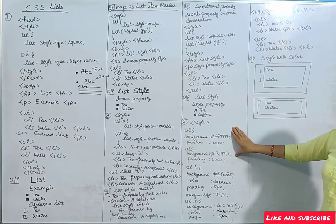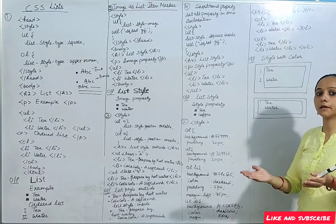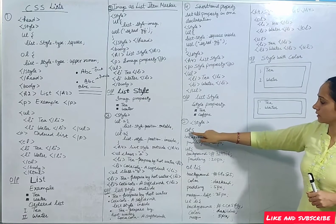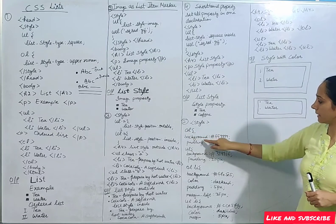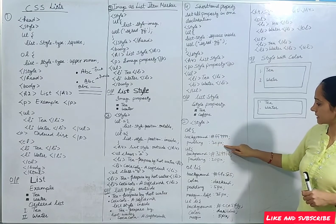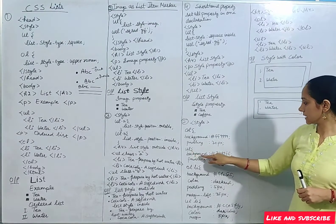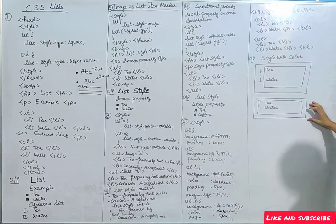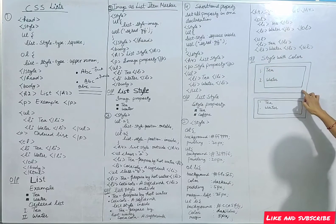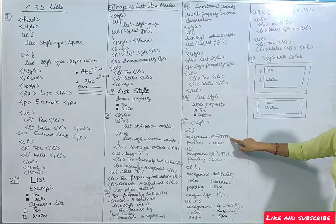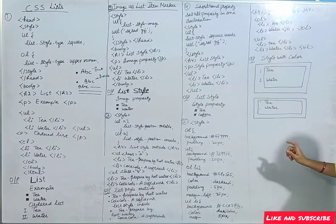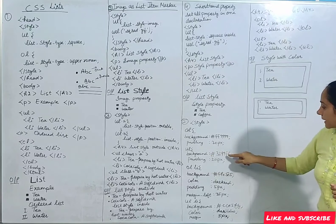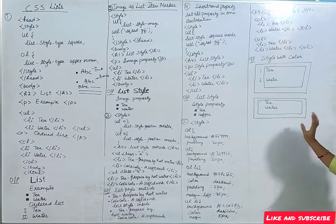After that, we can see something related to colors. We can add background colors to our ordered and unordered lists. In the style, the ordered list gets a background color code and a padding size. The unordered list also gets a background color code and padding size. The ordered list appears with a red background and 20 pixels of padding.